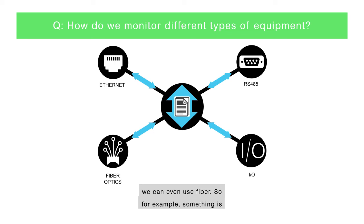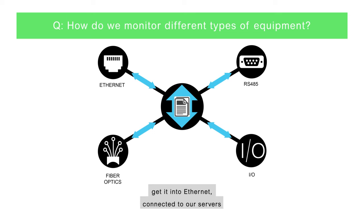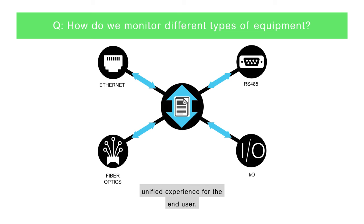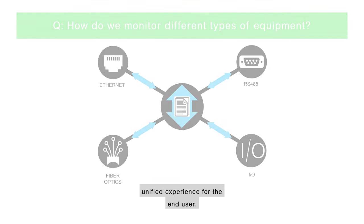For example, if something is 5,000 feet away, we can use Fiber. Ultimately, we want to get it into Ethernet, connected to our servers where we can aggregate all the data and provide a unified experience for the end user.